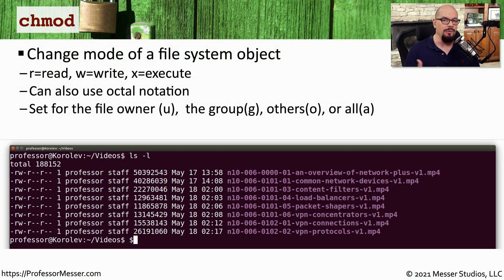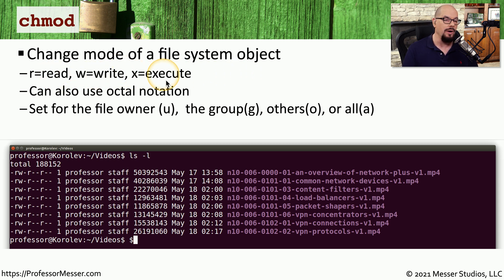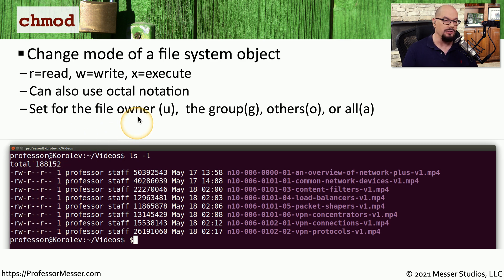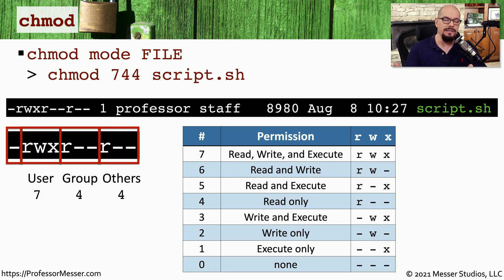There may be times when you want to change how a file is viewed, or whether a file might be able to be written to or executed in your operating system. The way you define these parameters is by using the chmod command, which allows you to change the mode of a file system object. In this context, 'mode' means changing it to either be read, write, or execute enabled. If you list the contents of a directory with the -l option, you'll see these modes listed at the very beginning in the first column.